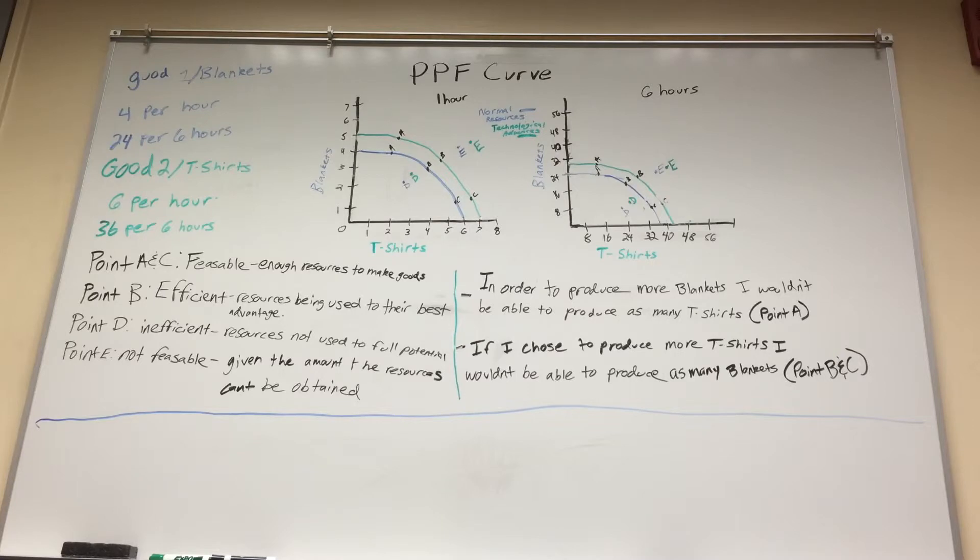Point D is inefficient, resources are not being used to their full potential, and point E is not feasible which means given the amount of the resources used it cannot be obtained.